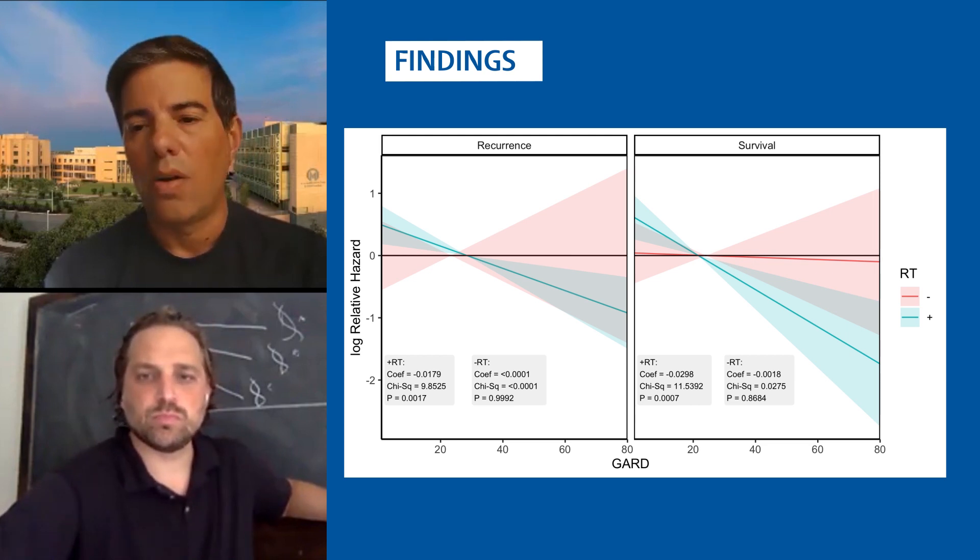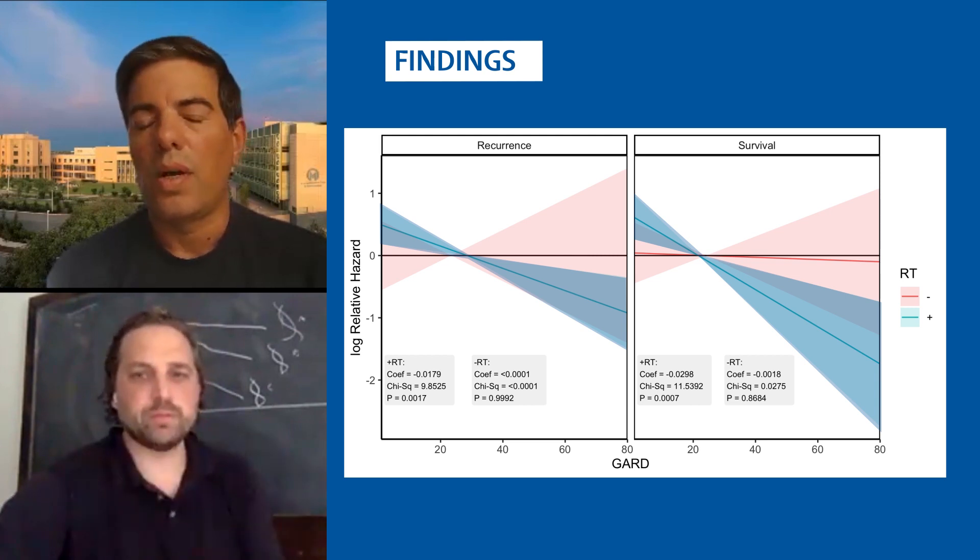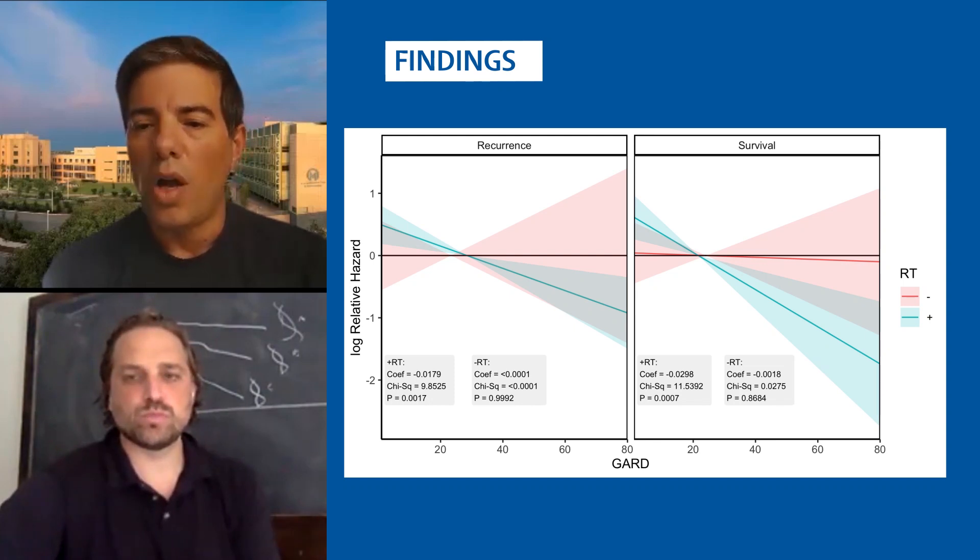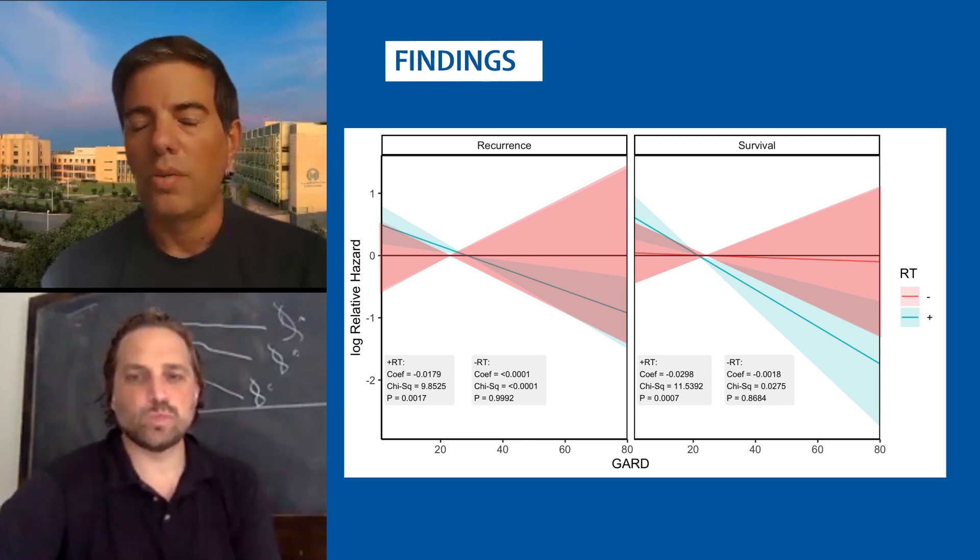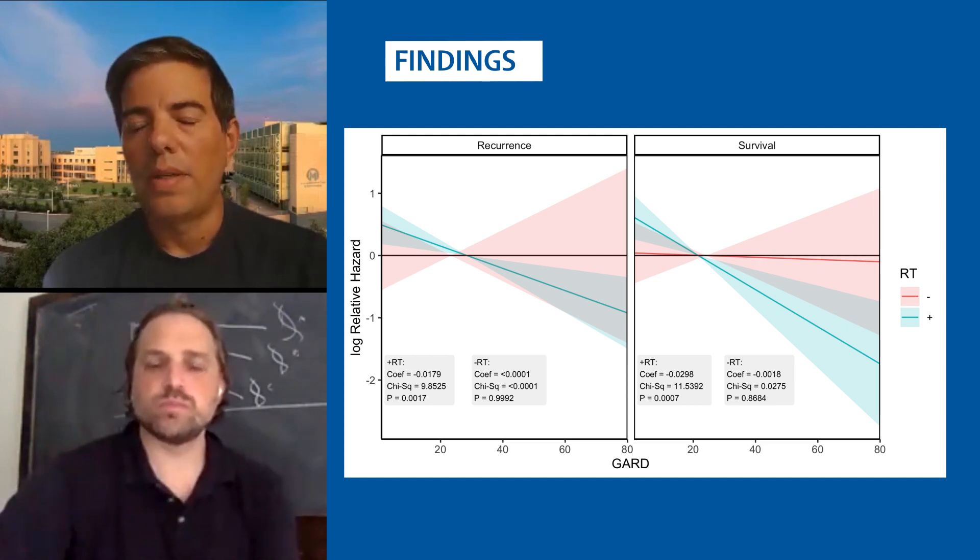Here we present the analysis by dichotomizing by whether patients receive radiation therapy or not. And as you can see, the patients that receive radiation GARD is highly associated with the clinical outcome. A higher GARD results in better survival on the right or recurrence-free survival on the left. But in patients that do not receive radiation in red, the GARD parameter has no interaction or no association with outcome. And critically, when we look at the Wald statistic, we demonstrate that GARD is actually predictive of the radiotherapy benefit, at least in the overall survival outcome.